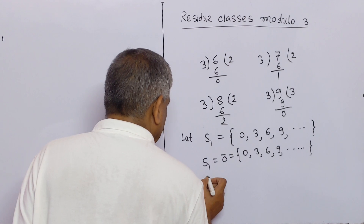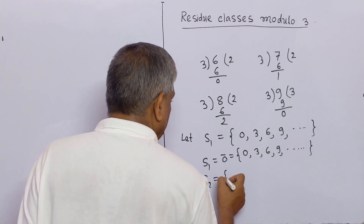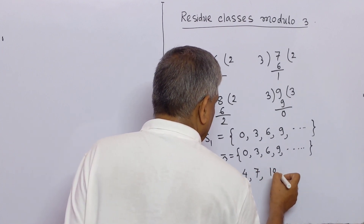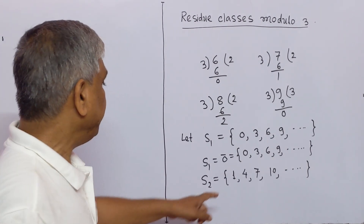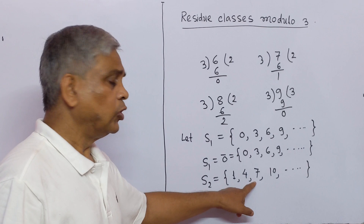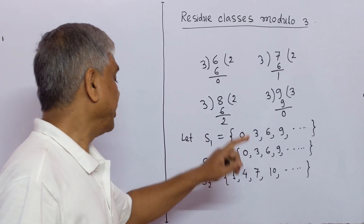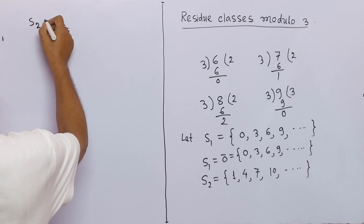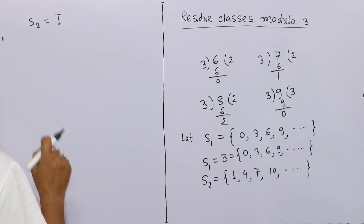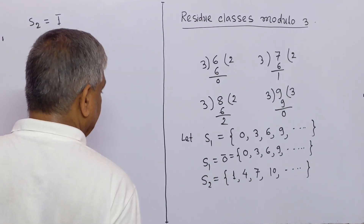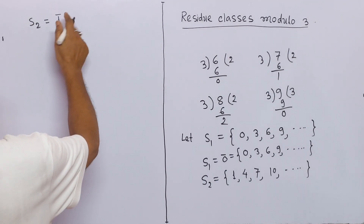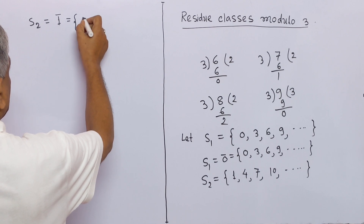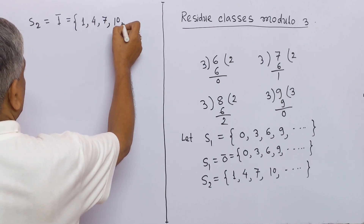Similarly, if we have a set S2 containing elements 1, 4, 7, 10, ... If we divide any member of S2 by 3, we get remainder 1. So we may write S2 as 1̄, meaning any member of S2 divided by 3 gives remainder 1. S2 = 1̄ = {1, 4, 7, 10, ...}.